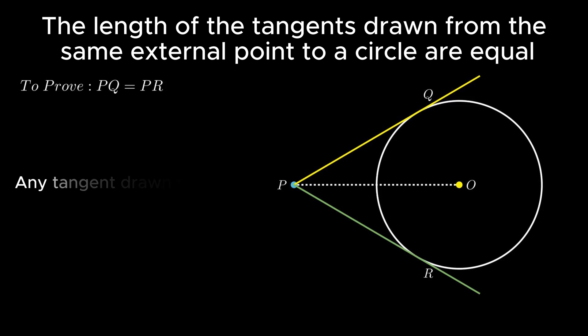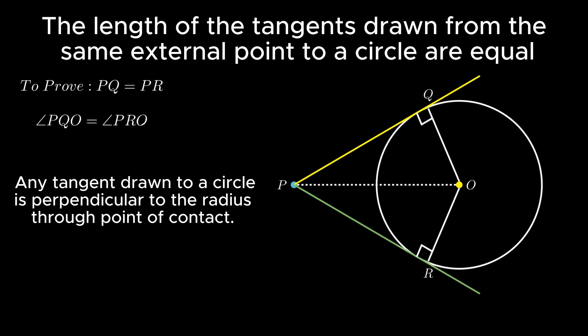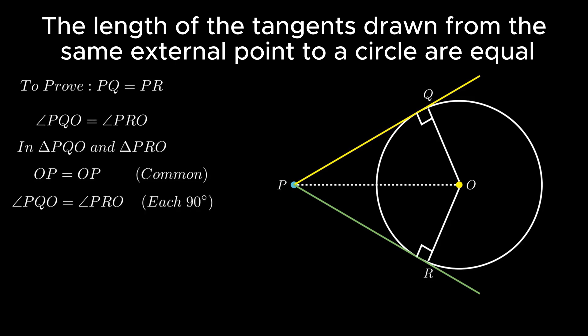Using the theorem that any tangent drawn to a circle is perpendicular to the radius through the point of contact, angle PQO and angle PRO each equal 90 degrees. Now in triangles PQO and PRO: OP is the common side, angle PQO equals angle PRO each equal to 90 degrees, and segment OQ equals segment OR as both are radii.